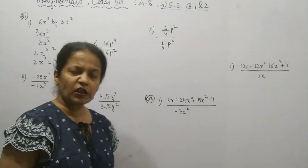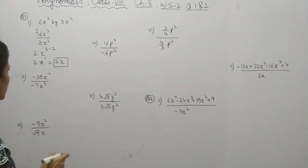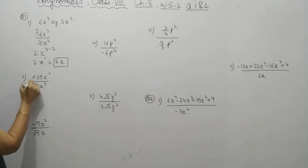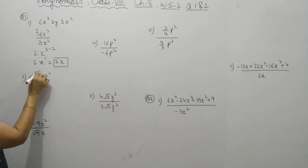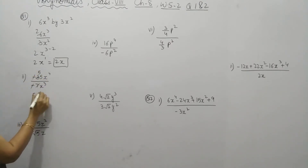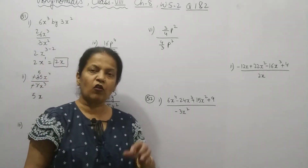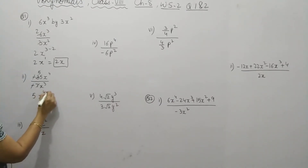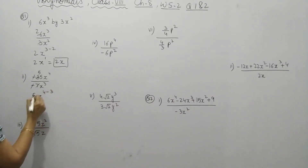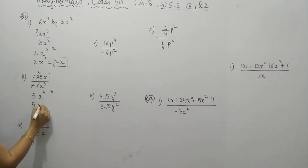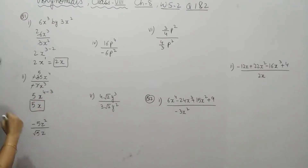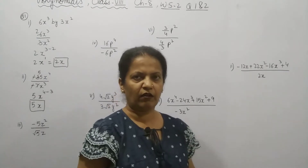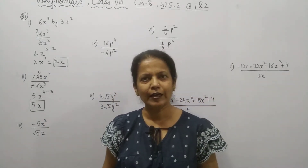Second part. In the second part, follow the same procedure. Negative and negative cancel out. So it gives 5. Bases are same and it is in division form, so upper exponent minus lower exponent: 4 minus 3 is 1. So it will be 5x itself. It's quite easy.